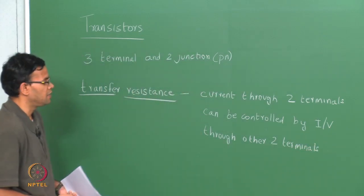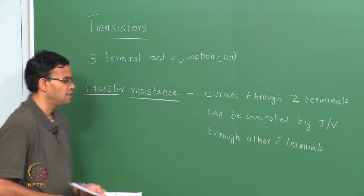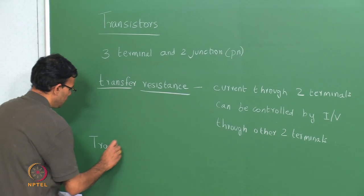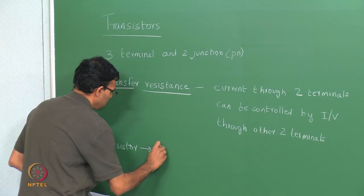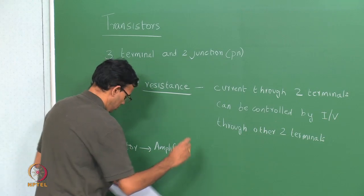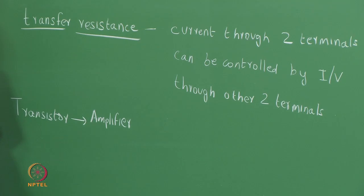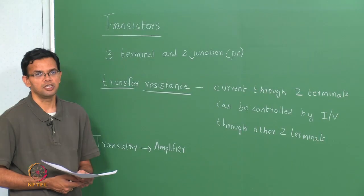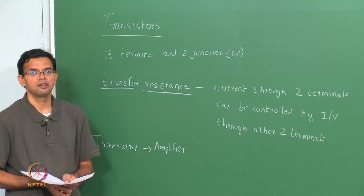When we look at examples of transistors this point will be made clear. A transistor can also act as an amplifier, in that you can take a small signal between a pair of terminals, amplify it, so that the output signal between another pair of terminals is higher.